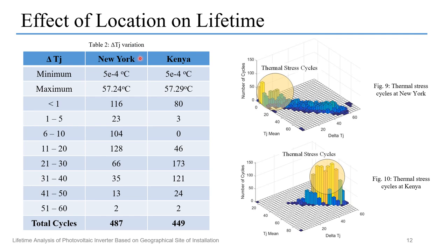Due to their location near the equator, there is also a higher temperature swing because of the make and break of solar irradiance. Here we can see the delta Tj variation at two different locations — Kenya, which is nearer to the equator, and New York, which is farther away. This delta Tj information is obtained from the rainflow algorithm output. We can see that the minimum and maximum values of delta Tj at both locations are the same, and New York actually has a higher total number of cycles, yet it faces lesser damage. From Figure 9, we can see that at New York the thermal stress cycles are at lower delta Tj and lower mean Tj values, whereas at Kenya more cycles occur at higher delta Tj and higher mean temperature, which is why locations nearer to the equator face higher damage.